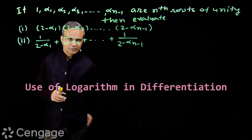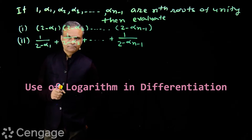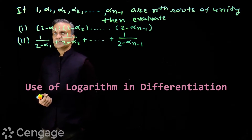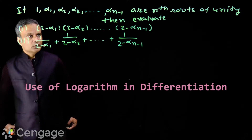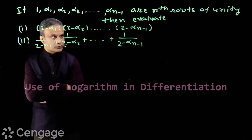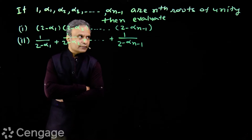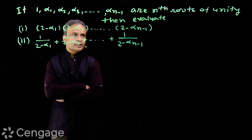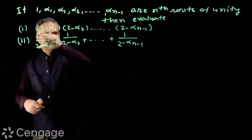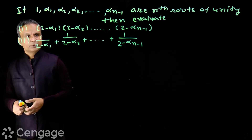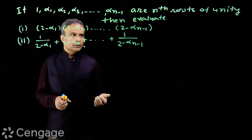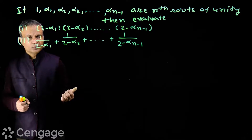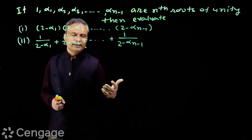We have a very interesting application of logarithm in differentiation. The question is: if 1, α₁, α₂, α₃, ..., αₙ₋₁ are nth roots of unity, evaluate two expressions. First: (2 - α₁)(2 - α₂)...(2 - αₙ₋₁). Second: 1/(2 - α₁) + 1/(2 - α₂) + ... + 1/(2 - αₙ₋₁).